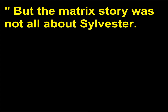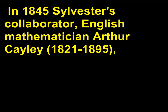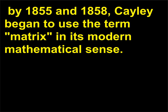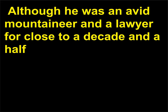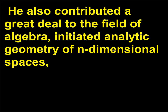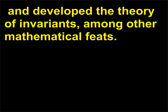But the matrix story was not all about Sylvester. In 1845, Sylvester's collaborator, English mathematician Arthur Cayley (1821–1895), used a form of matrices in his work on the theory of linear transformations. By 1855 and 1858, Cayley began to use the term matrix in its modern mathematical sense. Although he was an avid mountaineer and a lawyer for close to a decade and a half — which is how he met Sylvester — during his free time Cayley published more than 200 mathematical papers. He also contributed greatly to the field of algebra, initiated analytic geometry of n-dimensional spaces, and developed the theory of invariance, among other mathematical feats.